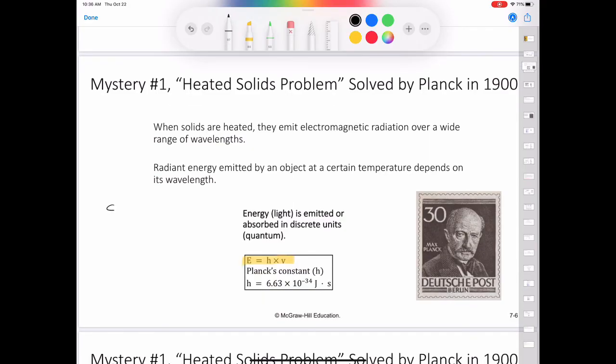Since we know that speed of light is equal to wavelength times frequency and we can solve for frequency being equal to speed of light over wavelength, now we can rewrite this equation to say that energy is equal to Planck's constant times the speed of light over wavelength. And now you can see that the energy of light is inversely proportional to wavelength.